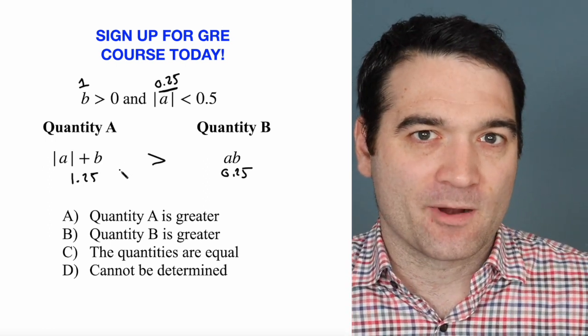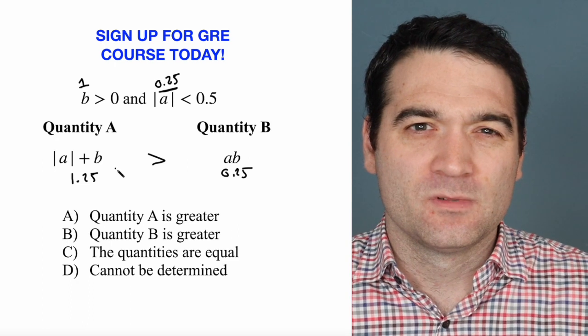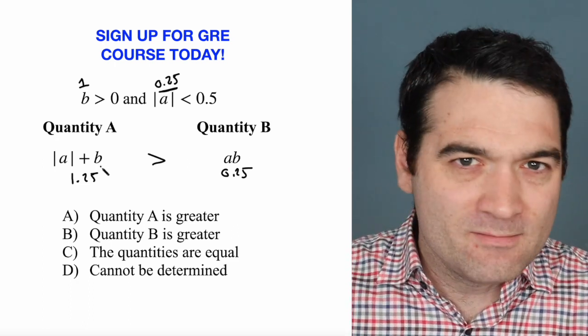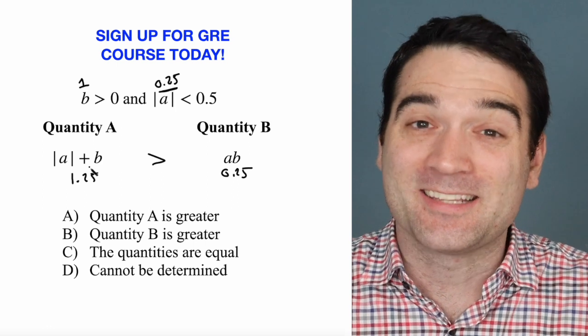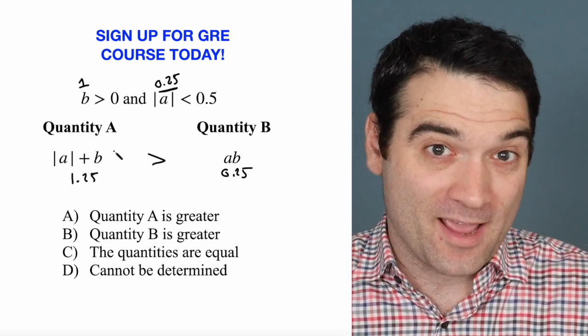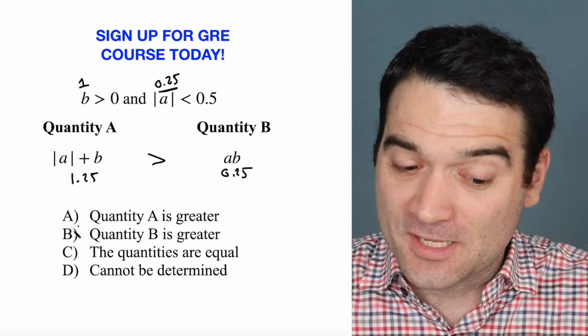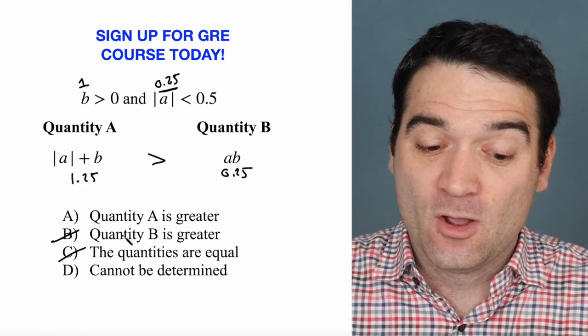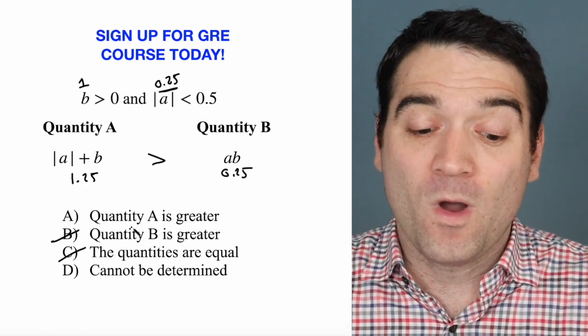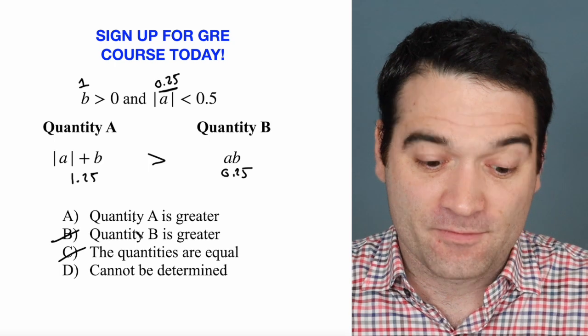But here's the question of the hour. Is that always true? Could there be one counter exception to this rule? And if there is, then we would have to choose answer option D. For now, though, let's get rid of answer options B and C. We have shown that in one case, quantity A is greater. That's enough for now.